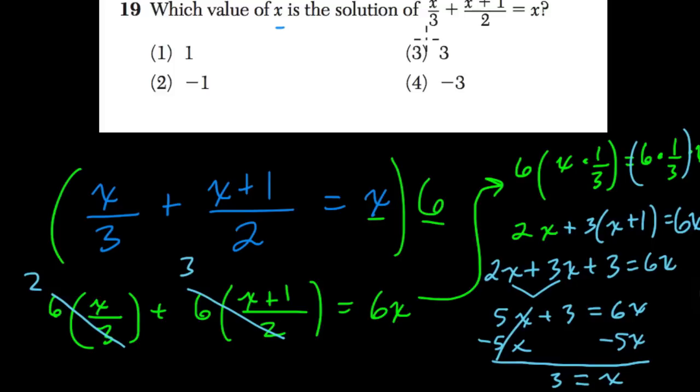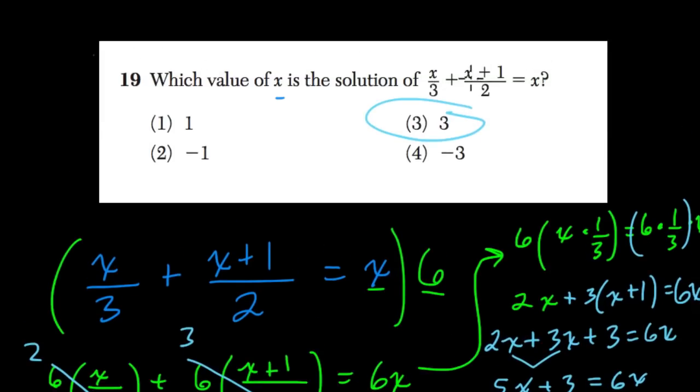So here I would choose 3. x is equal to 3, and you can test it. Go back to the original equation. 3 over 3 is 1, plus 4 over 2 is 2. Does that equal 3? Yes. So that works. x equals 3. Hope that helped.